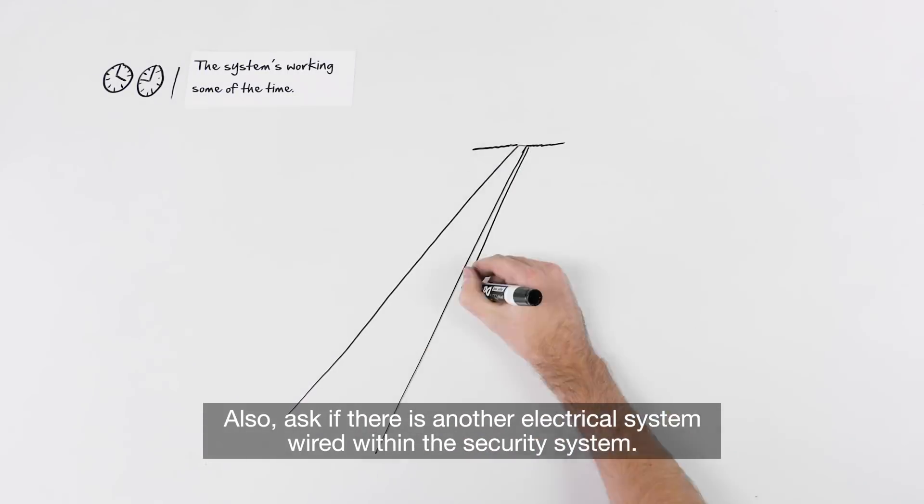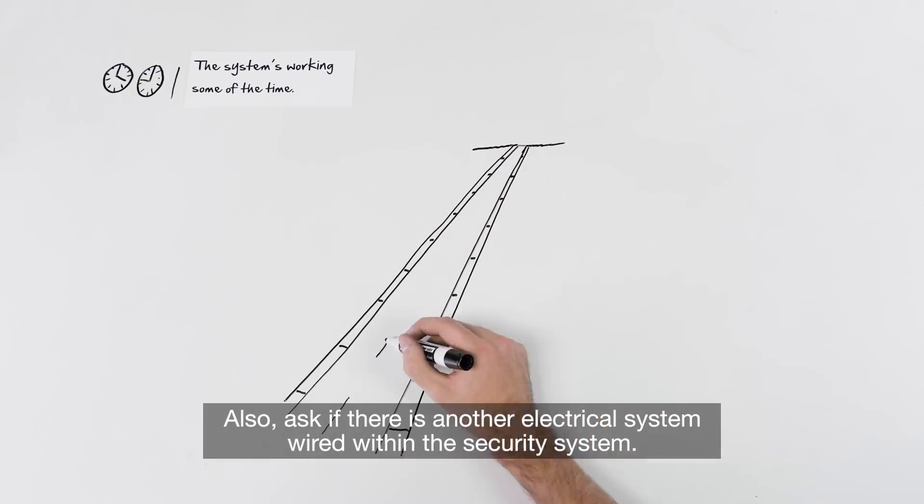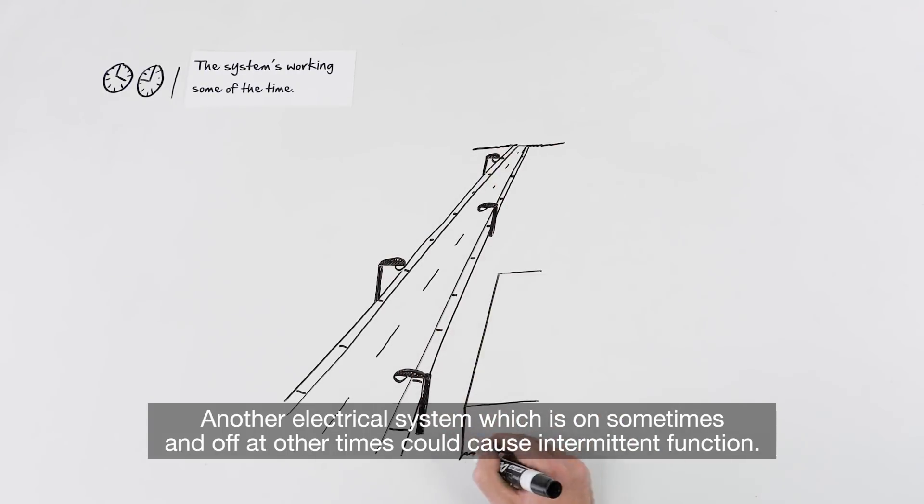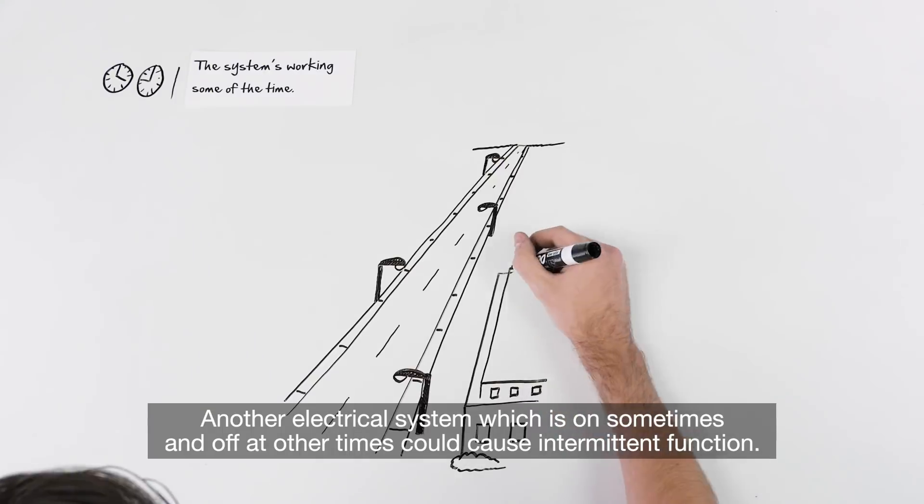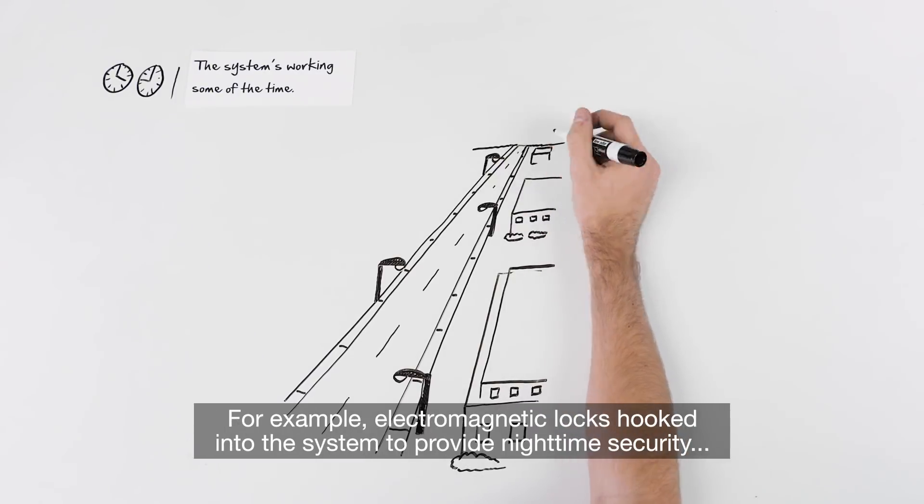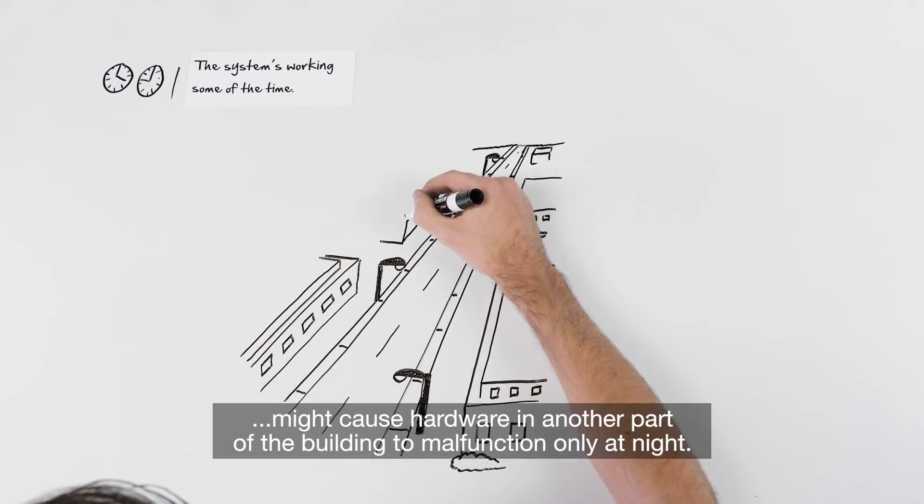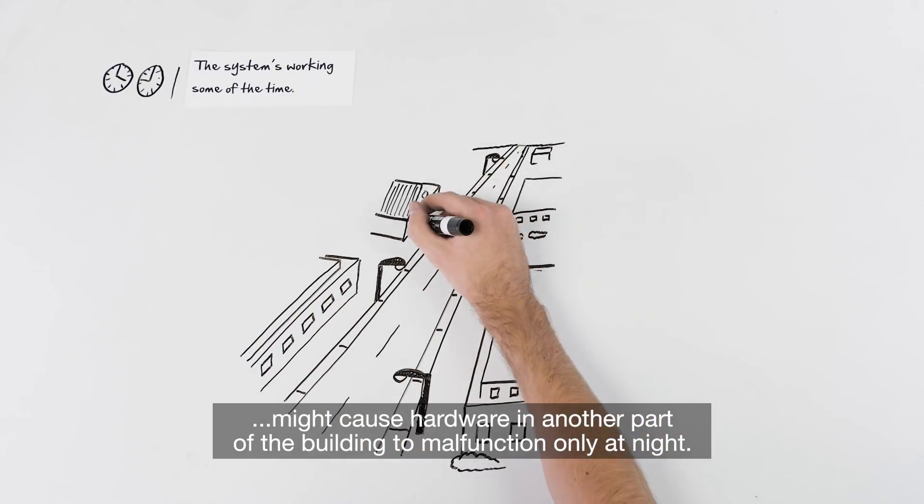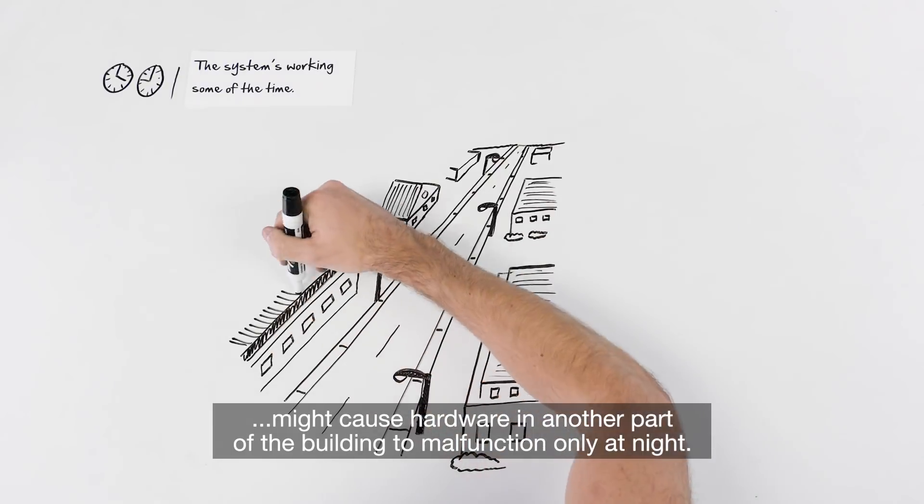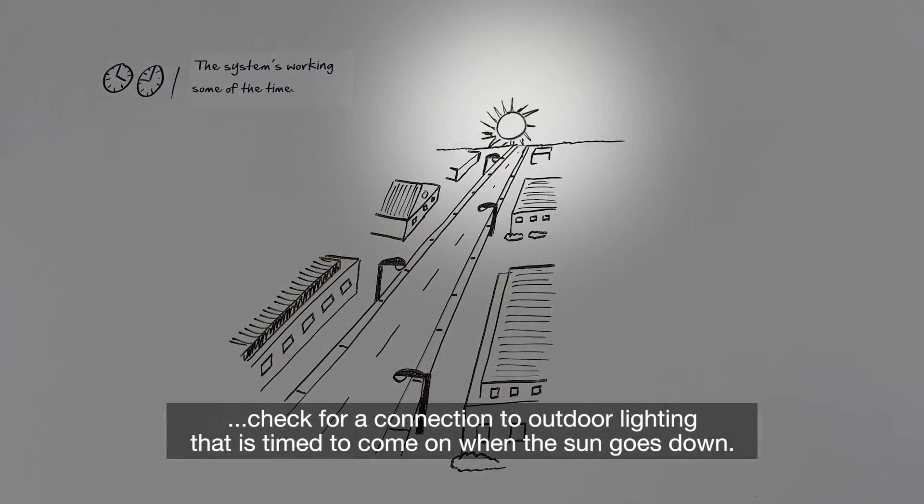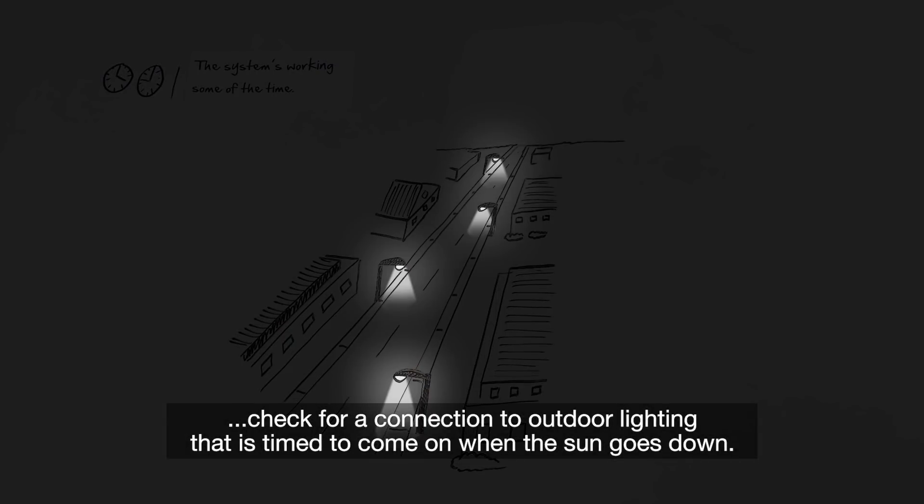Also, ask if there is another electrical system wired within the security system. Another electrical system which is on sometimes and off at other times could cause intermittent function. For example, electromagnetic locks hooked into the system to provide nighttime security might cause hardware in another part of the building to malfunction only at night. If a system is failing primarily after dark, check for a connection to outdoor lighting that is time to come on when the sun goes down.